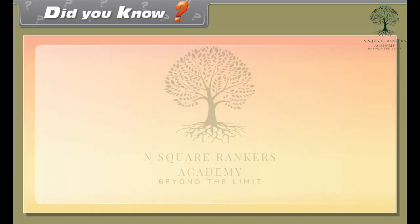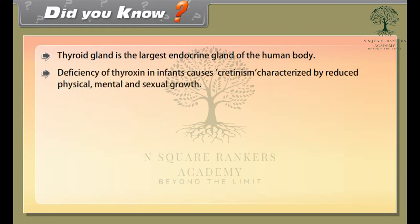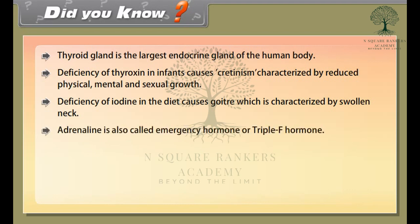The thyroid gland is the largest endocrine gland of the human body. Deficiency of thyroxine in infants causes cretinism, characterized by reduced physical, mental, and sexual growth. Deficiency of iodine in the diet causes goiter, characterized by a swollen neck. Adrenaline is also called the emergency hormone or the fight-or-flight hormone.